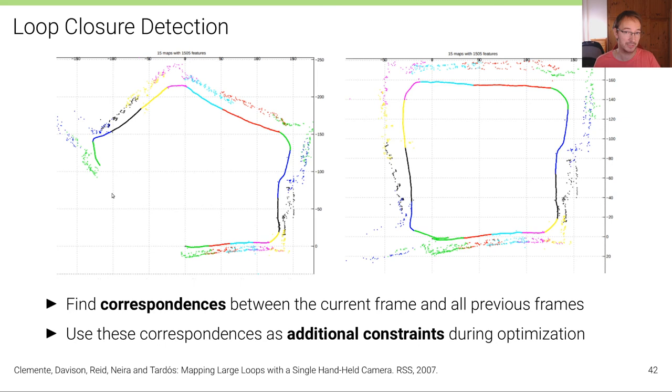Again, while traversing the environment, we can try to match features, not only with respect to previous frames, but also with respect to frames very far into the past. So let's say this is the current frame, we can try to match features to all previous frames. And we might find that there's features here that are very similar. And if we found such a loop closure, we can add these additional correspondences as additional constraints during optimization. And so after loop closure detection and after optimization, this is what we get.